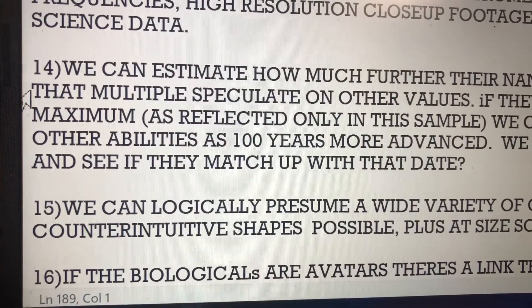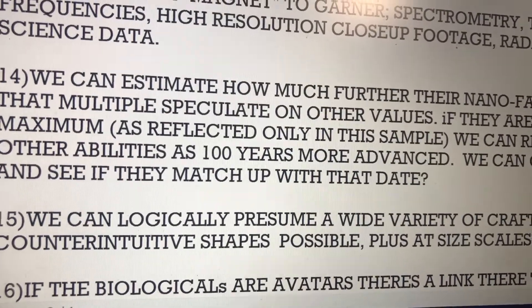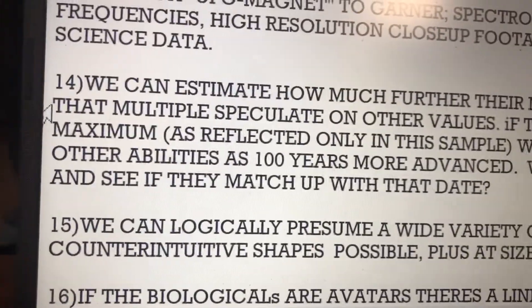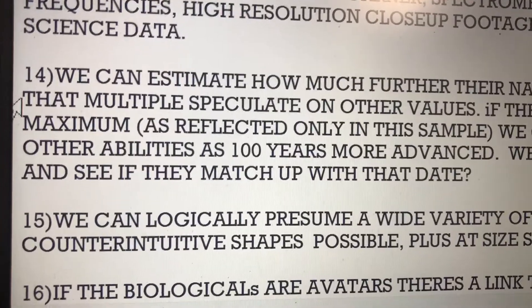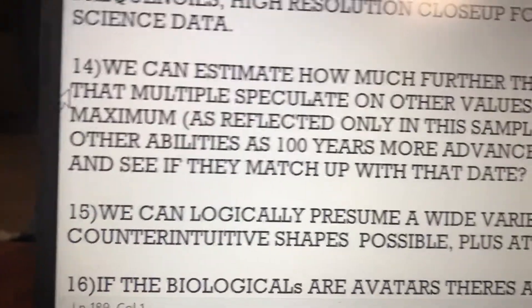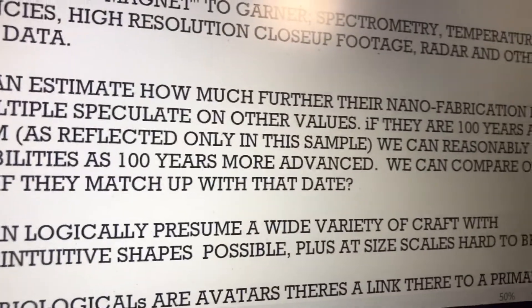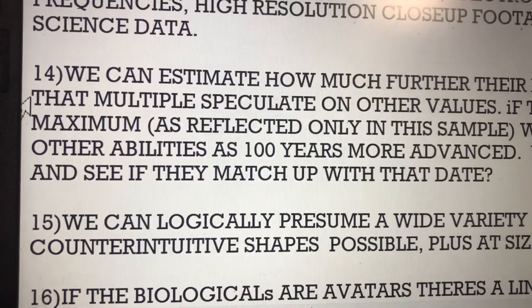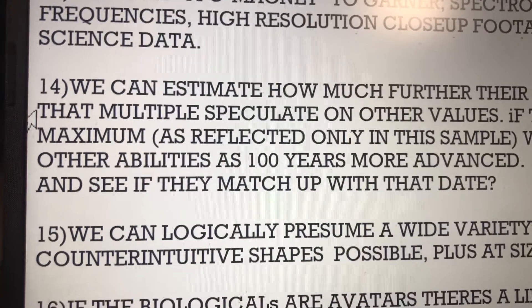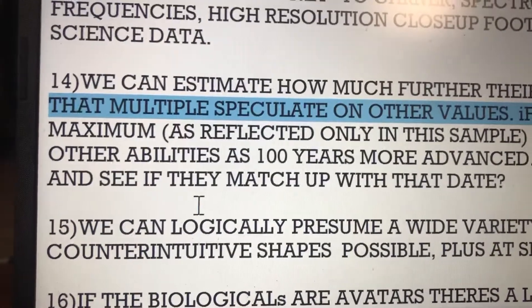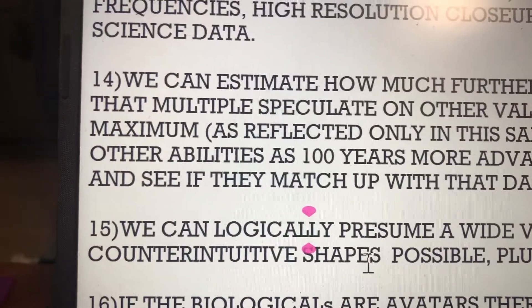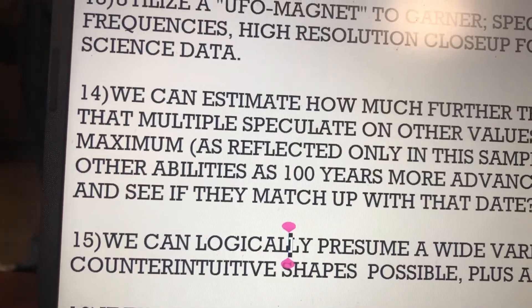We can estimate how much further their nanofabrication is than ours, and by that multiple speculate on other values. If they are 100 years ahead of us in manufacturing as reflected by just a sample from a craft, we could reasonably calculate other abilities as 100 years more advanced as well. We can logically presume a wide range of craft with counterintuitive shapes at all sorts of scales — both large and small — hard for us to believe.